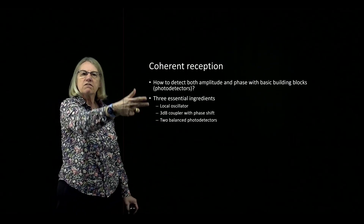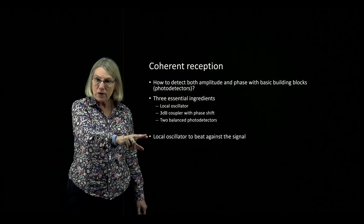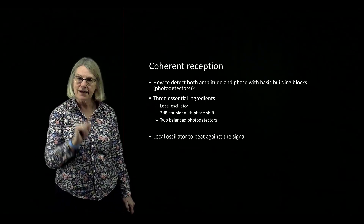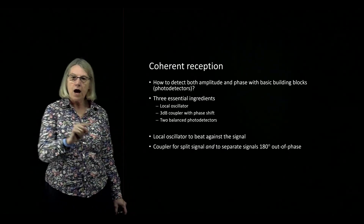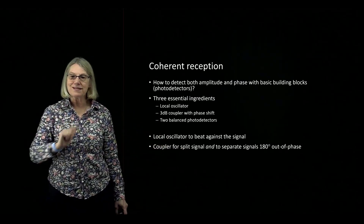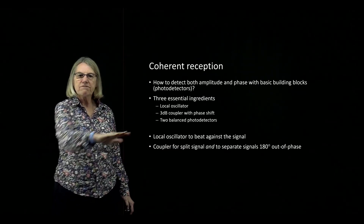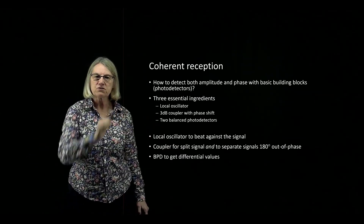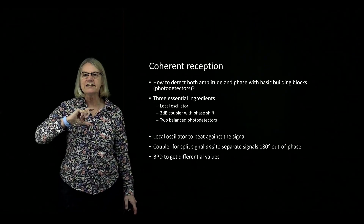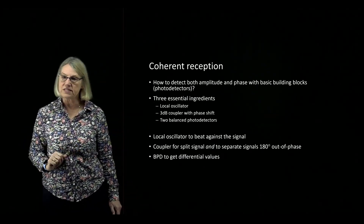These are the essential ingredients. The local oscillator is needed because it's going to beat against the signal. The coupler doesn't just split the signal — it helps us separate signals that are 180 degrees out of phase. And finally, the balanced photodetectors allow us to get a differential value on the signals being received simultaneously.